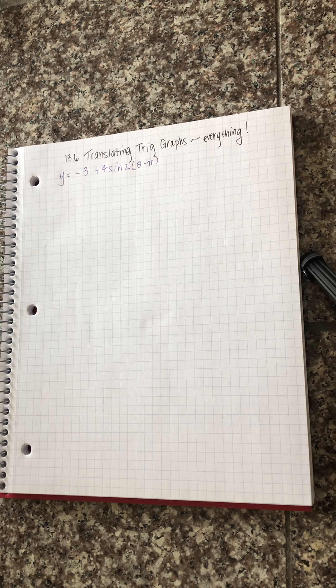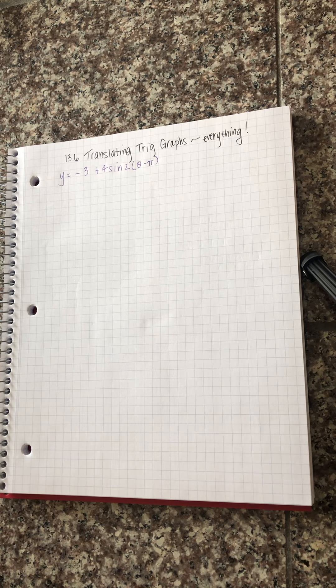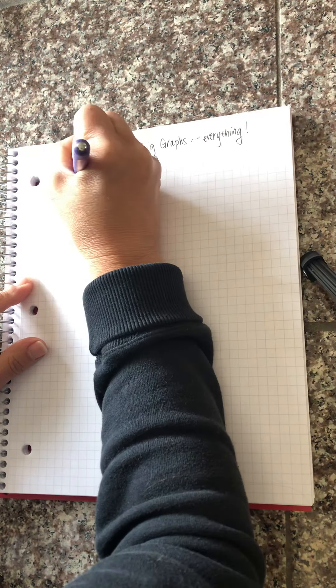So if I would do it in class we're going to do it here. The amplitude is four. This is going to be shifted down three so my sinusoidal axis is y equals negative three.